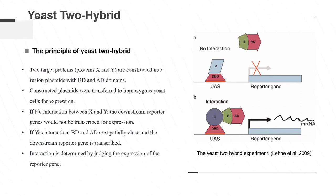The establishment of the yeast-2 hybrid system is based on the understanding of the eukaryotic transcriptional regulation process. Gene transcription in eukaryotes requires the involvement of transcriptional activators. Eukaryotic transcriptional activation factors contain two different domains: the DNA binding domain (DNA-BD) and the DNA transcription activation domain (AD). These two domains can be separated independently, and their functions do not affect each other. BD and AD alone cannot activate transcription. Only when the two are sufficiently close in space can the complete transcriptional activator activity be achieved, enabling the downstream genes to be transcribed.